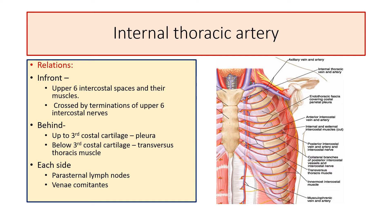On each side of the artery lies a vertical chain of parasternal lymph nodes and the venae comitantes — the two veins accompanying the artery. These venae comitantes extend up to the level of the third costal cartilage, where they unite to form a single internal thoracic vein, which ascends upwards on the medial side of the artery and opens into the brachiocephalic vein of the corresponding side.